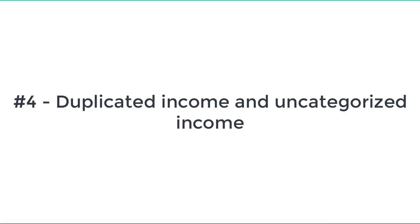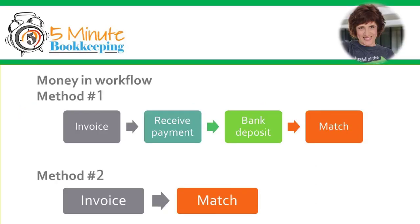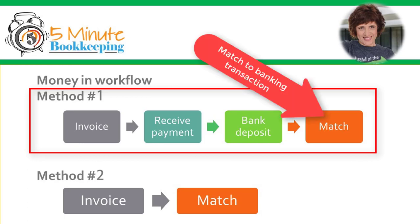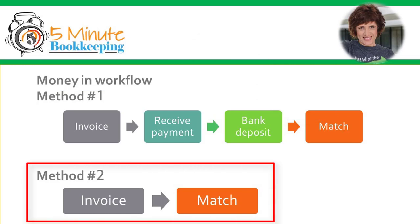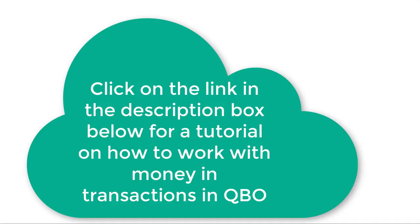Number four: duplicated income and uncategorized income. As a general rule, money in banking transactions in QBO should be matched and not added. Here's a sample money-in workflow: if you invoice customers in QuickBooks, first you enter an invoice, then enter a payment from your customer once you receive it, and then record a bank deposit — then you would match that bank deposit in the banking transactions. You can also use method two where you invoice a customer and match a customer payment received in the banking transactions to an invoice in QuickBooks. Click the link in the description box below for a step-by-step tutorial on how to properly work with money-in transactions in QBO.